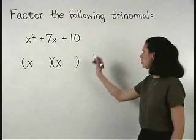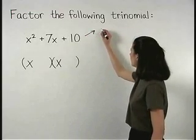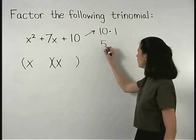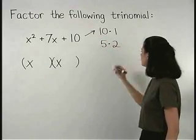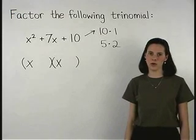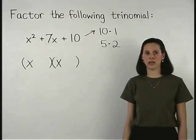Ten can be thought of as ten times one, but it can also be thought of as five times two. So how do we know whether we use a ten and a one, or a five and a two?